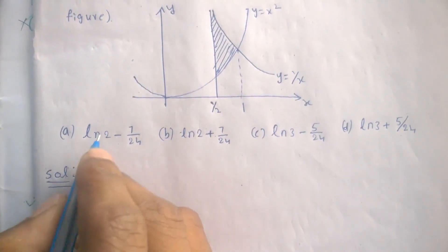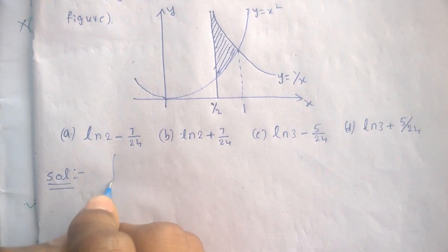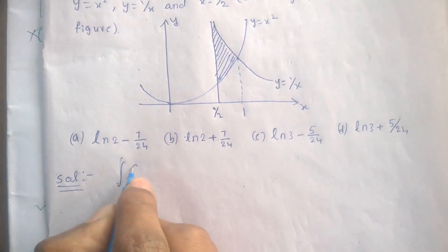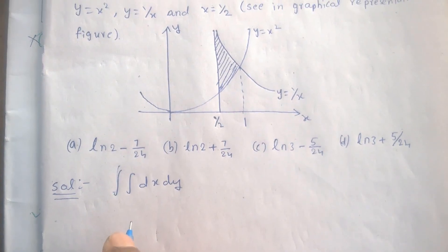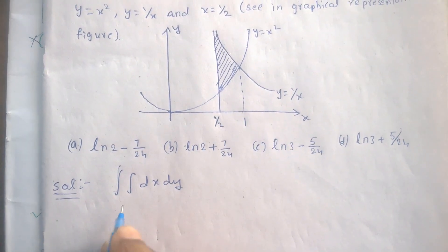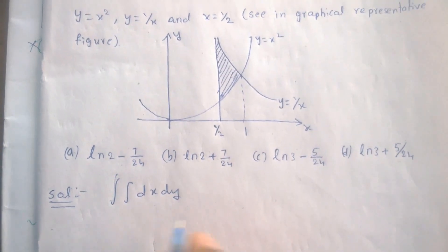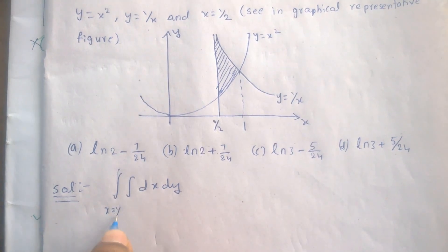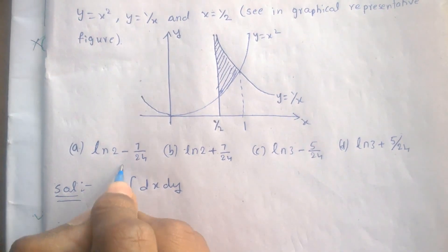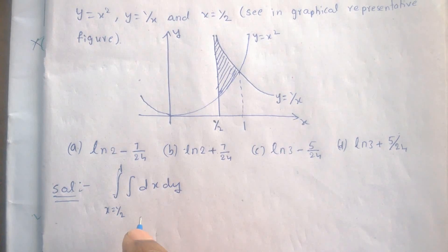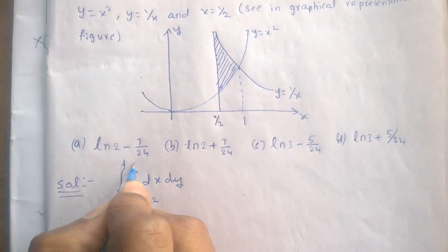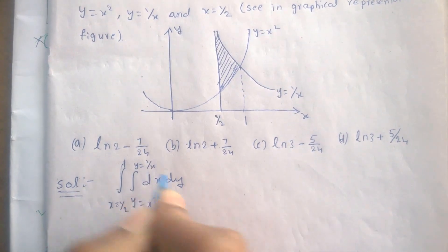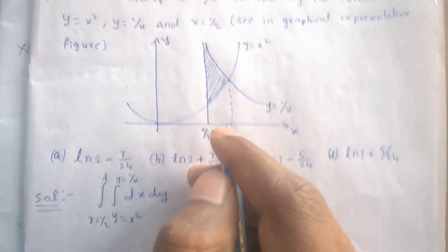This is a very simple question. The answer is we have to find the area which is nothing but the double integral of dx dy, where we have to find the limits: x limits and y limits. x is from 1 by 2 to 1, and y is from y equals x square to y equals 1 by x.